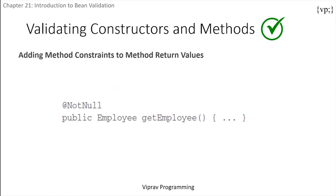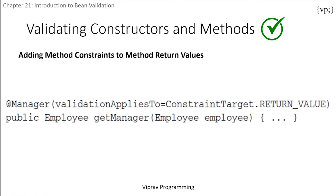Then there's adding method constraints to method return values. As you can see in this example, this constraint applies to the return values of this method. Because this method has no parameters, this cannot be a cross-parameter constraint. But if there were parameters, this creates an ambiguity which needs to be solved. Here, the @Manager constraint has its target set to the return value, removing any ambiguity.